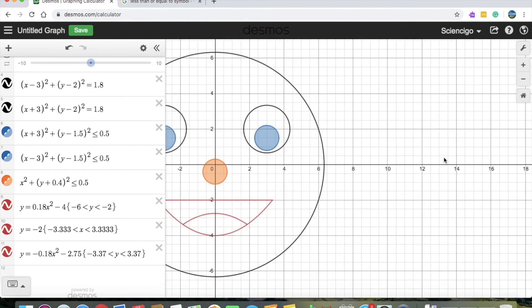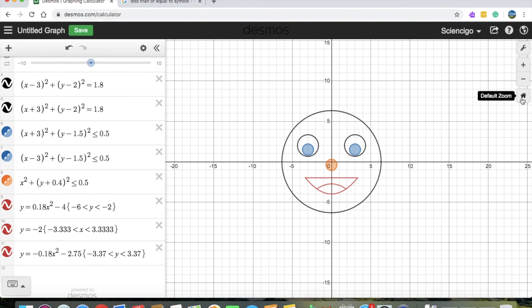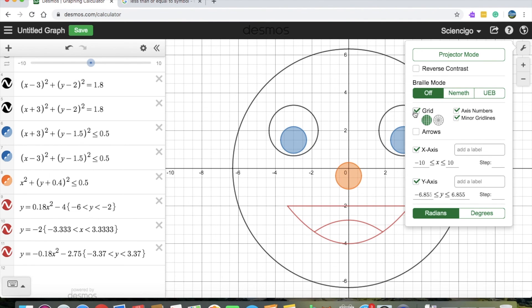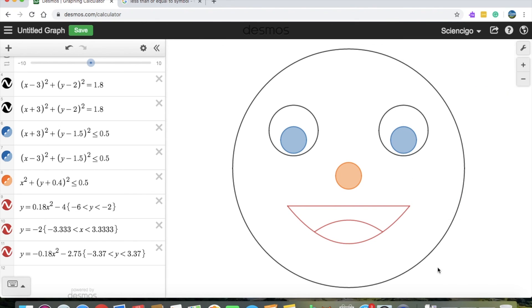Wow. That looks beautiful. Cute smiley face. Loving one. We can even remove the grid and lines. So we go to settings. Remove the grid. Remove the x-axis and the y-axis. And we've got this plain one. A lovely mathematical laughing emoji.